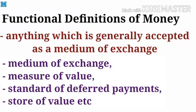Second, the functional definition of money. According to this definition, anything which is generally accepted as a medium of exchange in payment of debts and as payment for goods and services is called money. This functional definition is focused on the basis of the functions which money performs, such as medium of exchange, measure of value, standard of deferred payments, and store of value. Claude's definition is considered the best: anything that is generally accepted as a means of exchange and at the same time acts as a measure and store of value is defined as money.